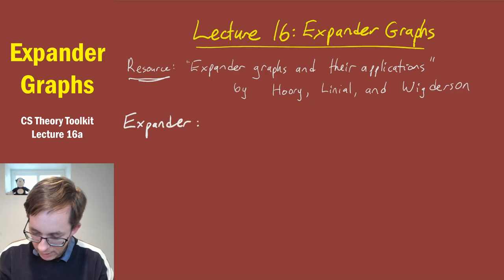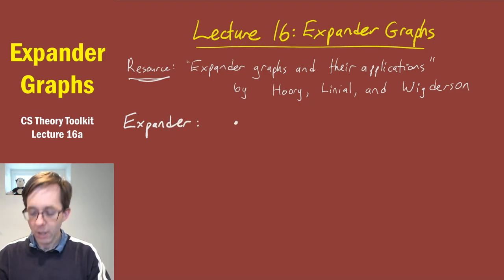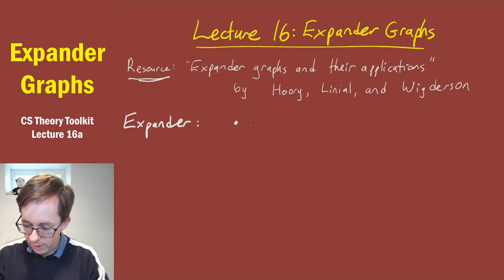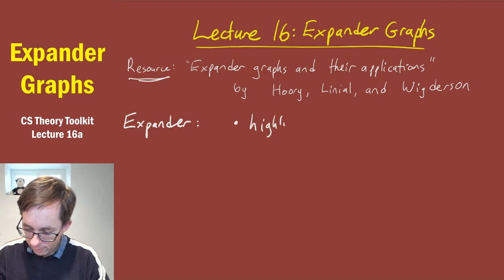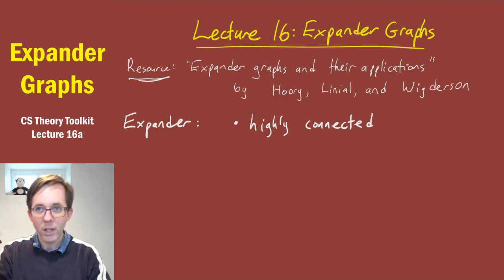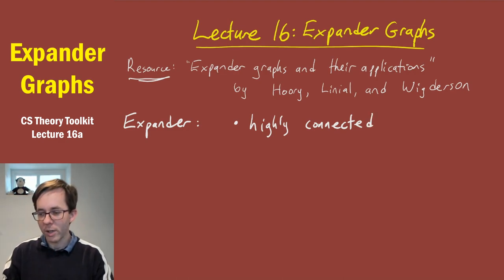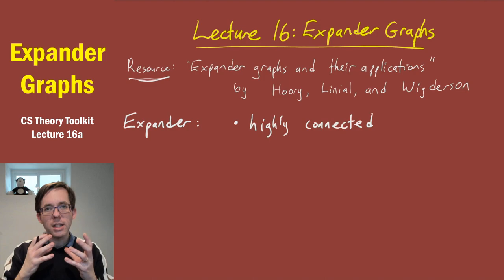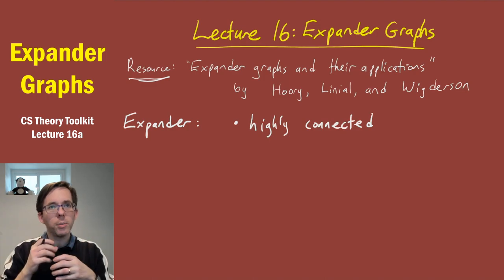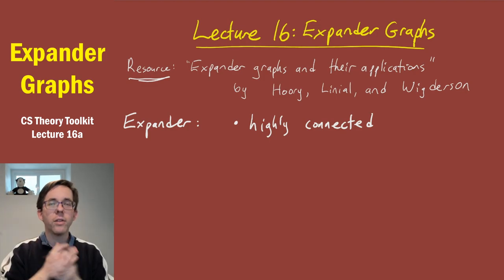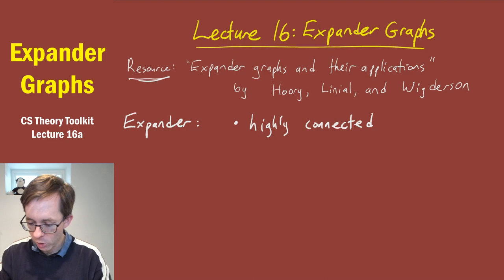Roughly speaking, an expander generally means a graph which has three properties. First, the graph should be highly connected. It shouldn't be a disconnected graph, and it shouldn't have some vertices that are just dangling off with only one connection to the rest of the graph. Every set of vertices should be well connected to all the other vertices in some sense. We'll be more precise shortly.